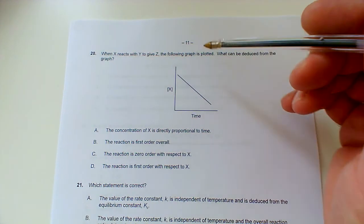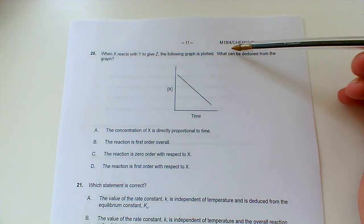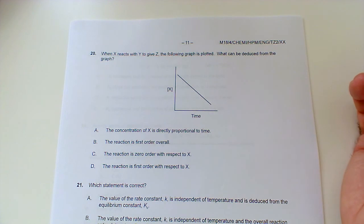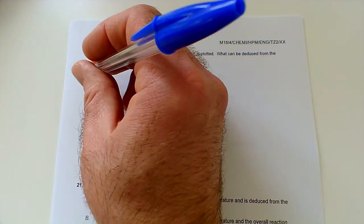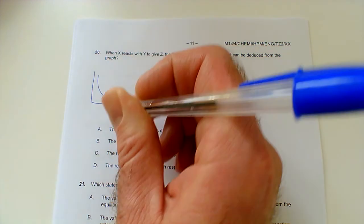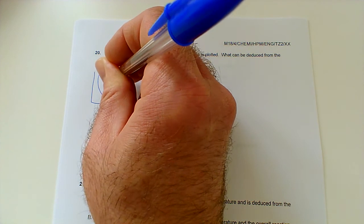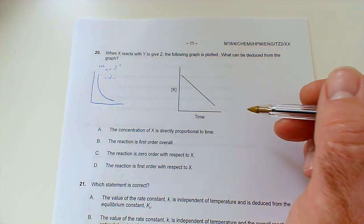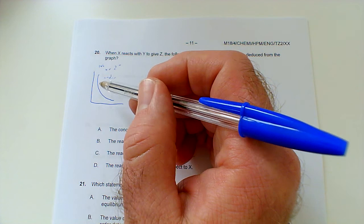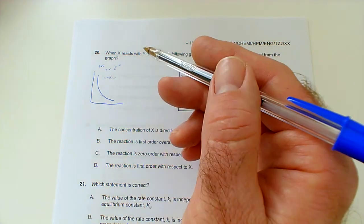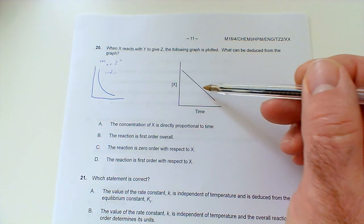Last but not least, question 20. When X reacts with Y to give Z, the following graph is plotted. What can we deduce? We've got a concentration-time graph, and there's three you need to know basically. For two of them you get more of the curve, and with the curve it's a bit tricky to spot. They will be first or they will be second order. If it's first order you'd get a constant half-life. Second order tends to be a bit steeper, but that's why it's better to have a rate-concentration graph because then it's a bit more obvious. But this one is very diagnostic. This straight line going down is telling you it's zero order.